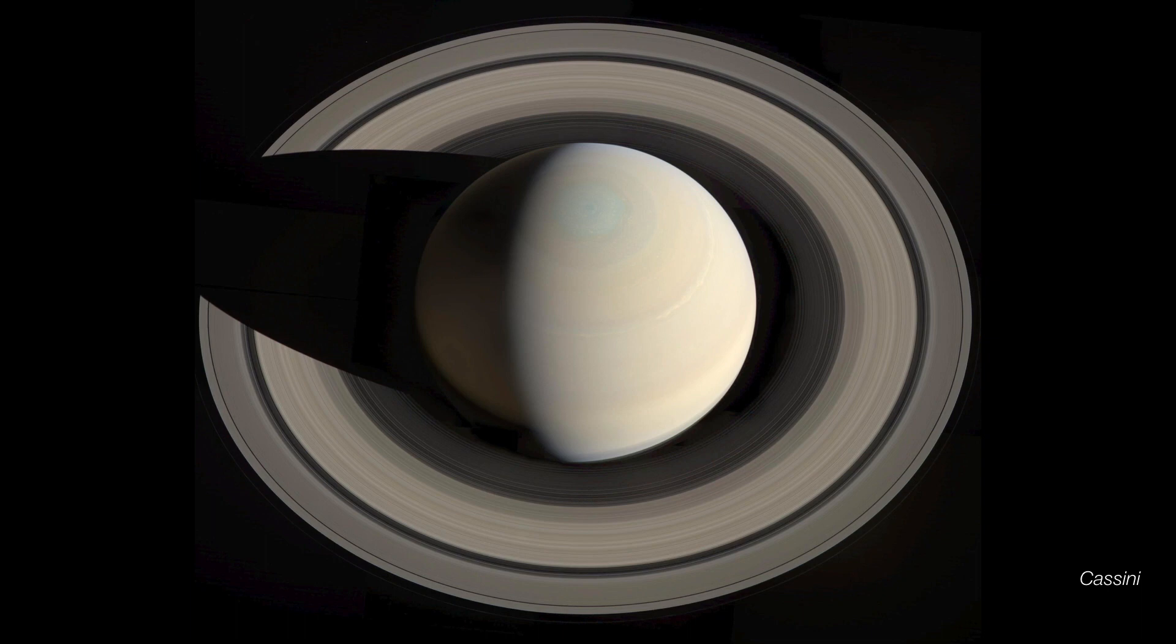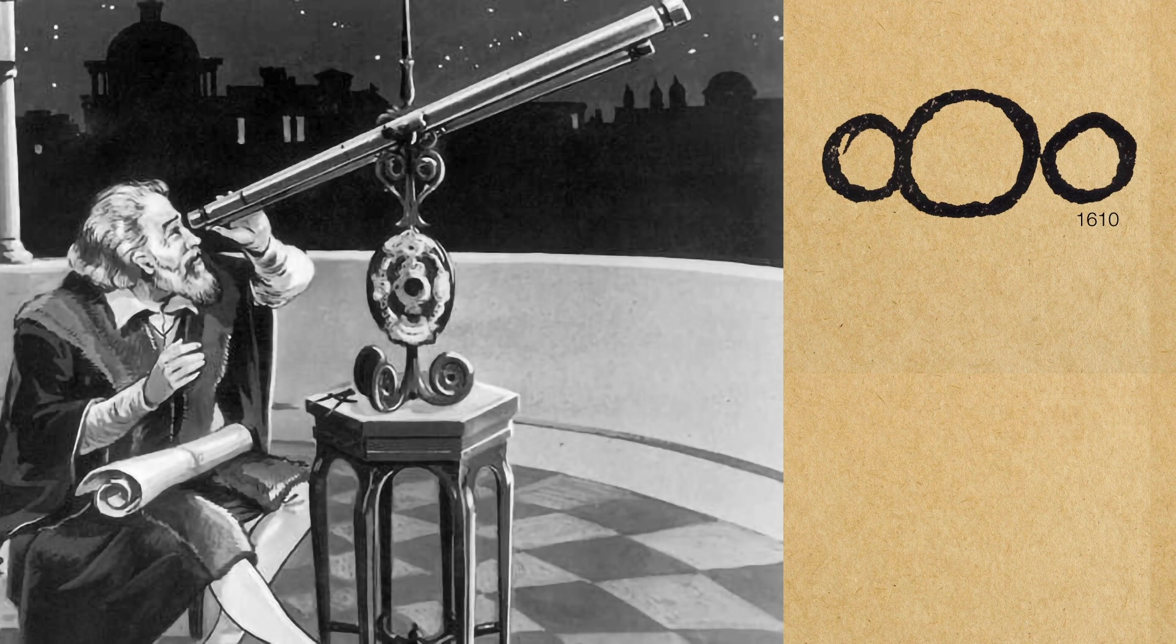Although the planet Saturn has been known since antiquity, its rings were not first glimpsed until Galileo trained his telescope toward the planet. Galileo quickly understood there was something different about Saturn. It had ears, these lobes that appeared on either side of the planet.